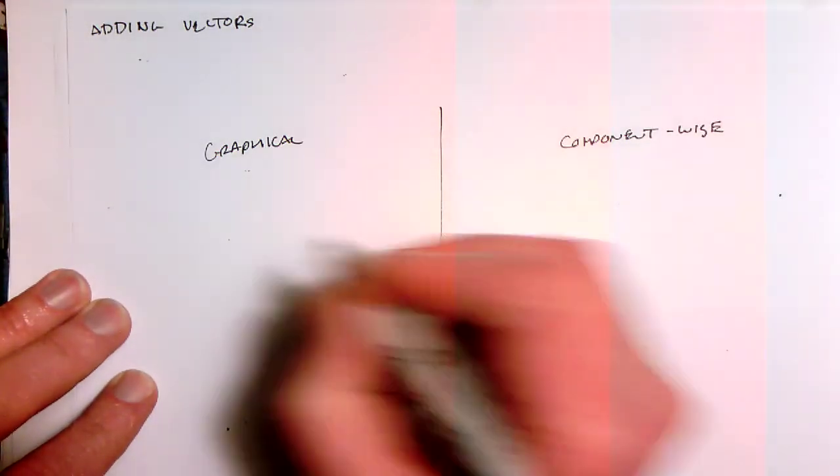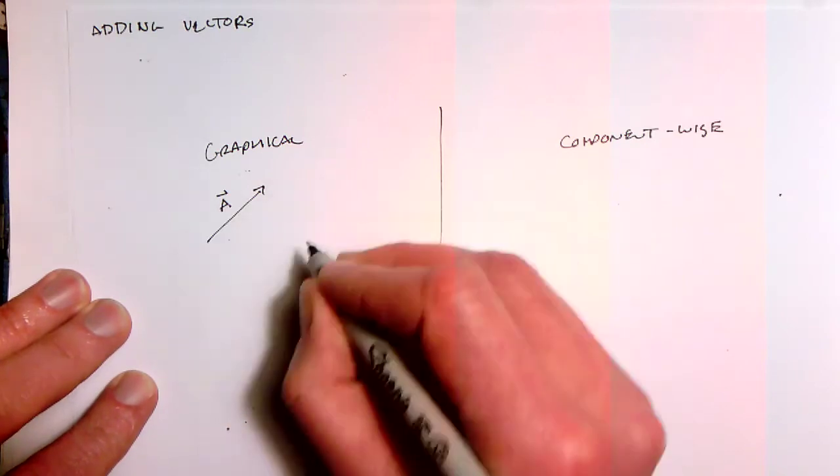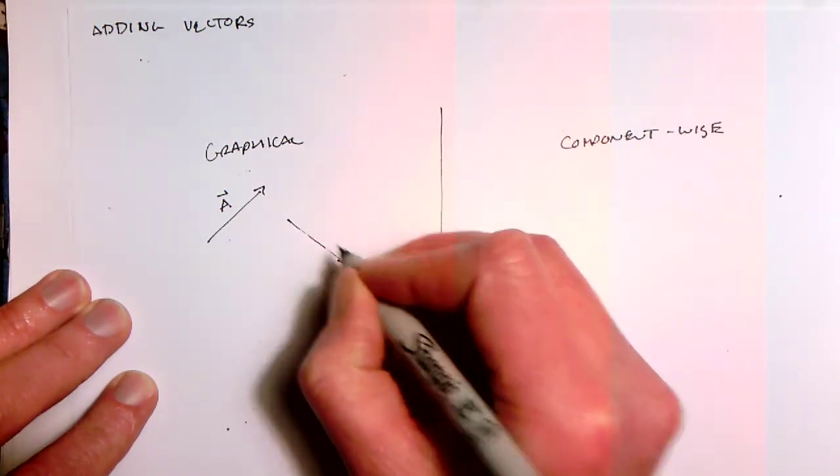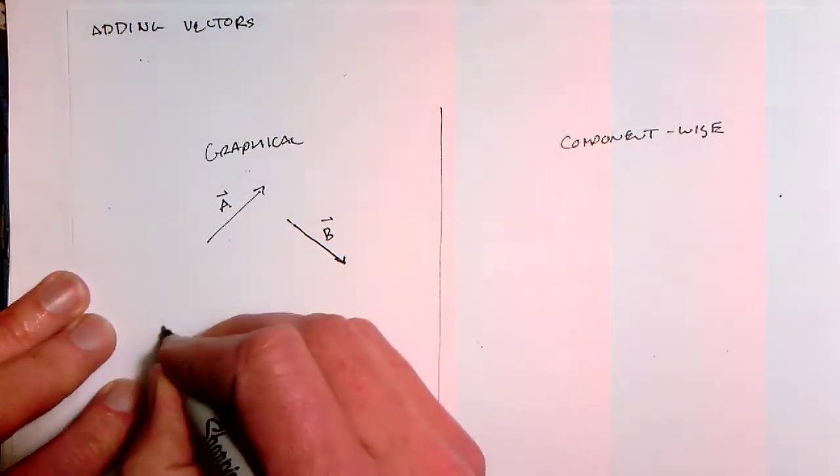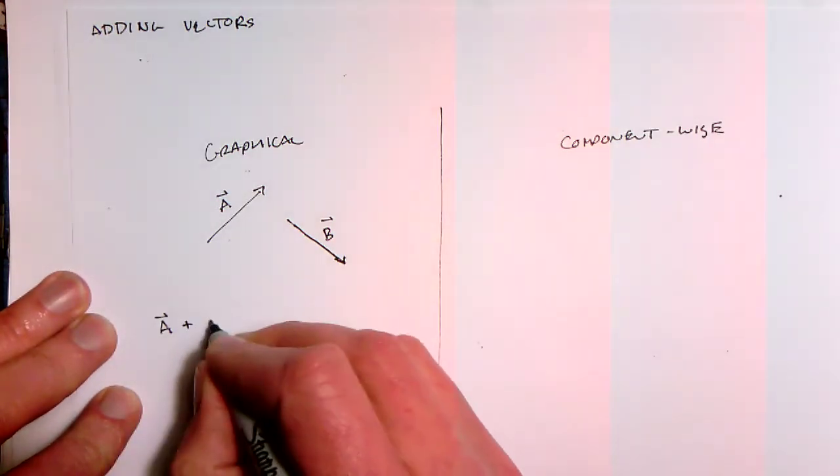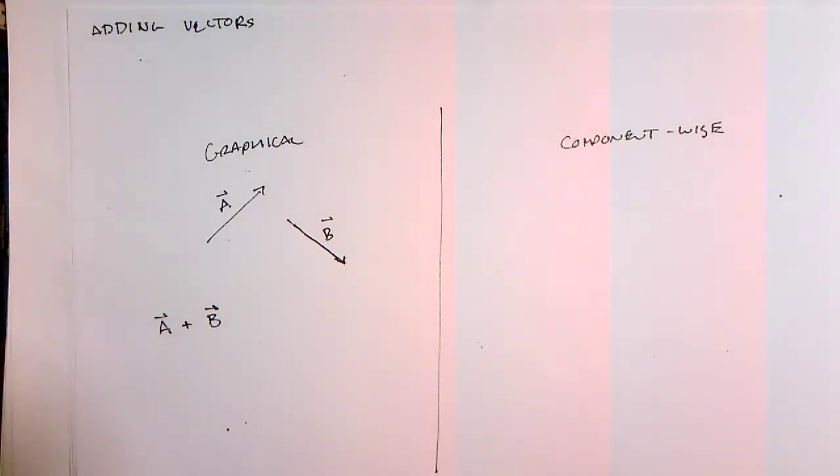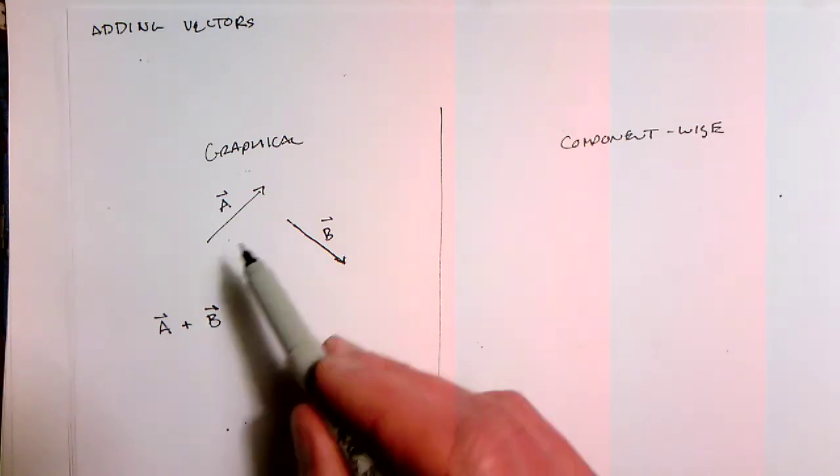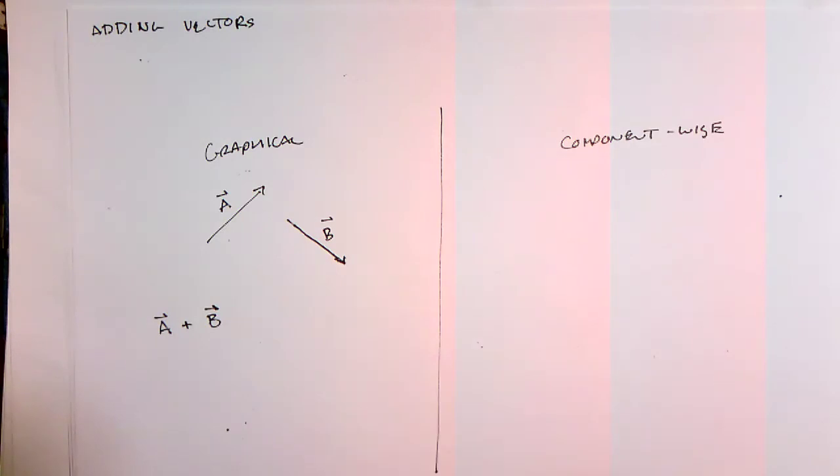So let's imagine that we have two vectors, A that points in some direction and then B that points in some other direction. Now if you think about what we mean by A plus B, it's easy to think about that graphically if we imagine vectors as giving you instructions for going a distance in a certain direction. So if we had A plus B, that would mean to go this far in this direction and then follow that by going this far in this direction.